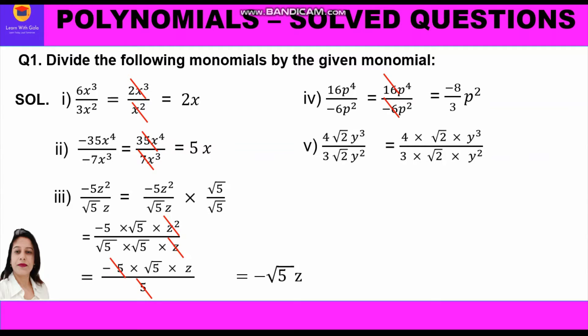The fifth part is 4√2·y³ divided by 3√2·y². Writing in factor form: 4·√2·y³ over 3·√2·y². The √2 terms cancel, y³ divided by y² gives y, and 4/3 remains as is. The final answer is 4/3·y.